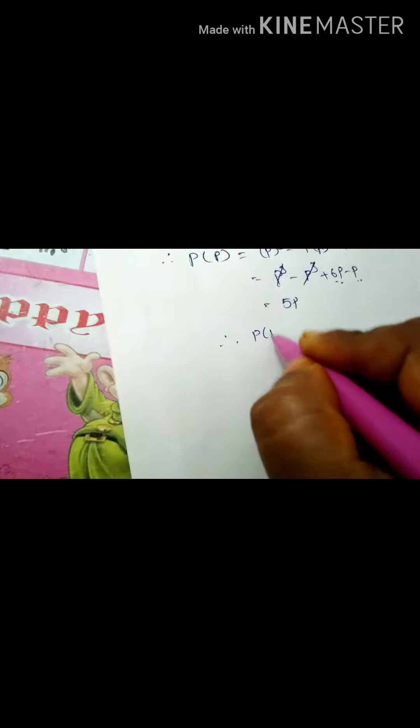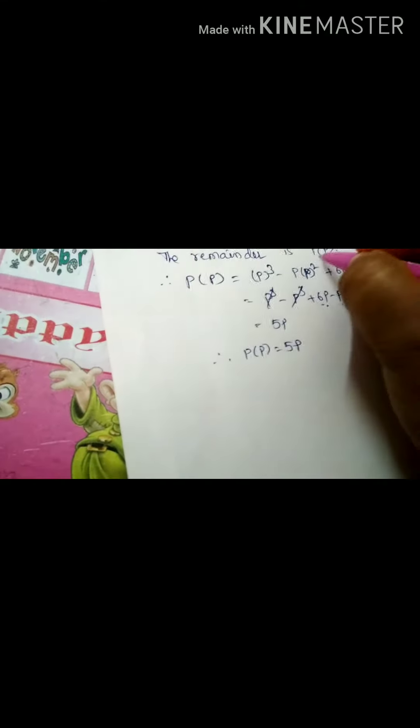p cube cancel 6p minus p. Substitute these two we are getting 5p. Therefore p of p is equal to 5p. The remainder is 5p.